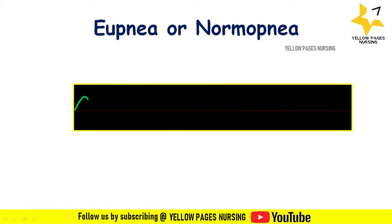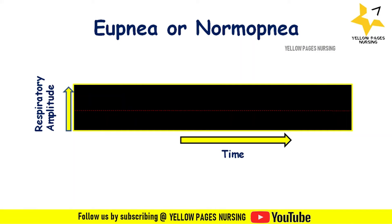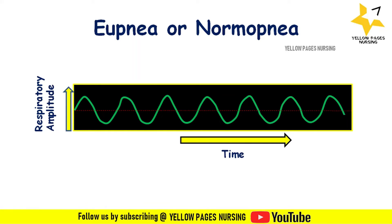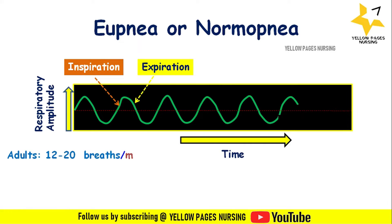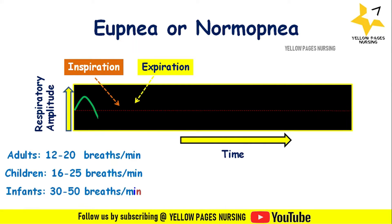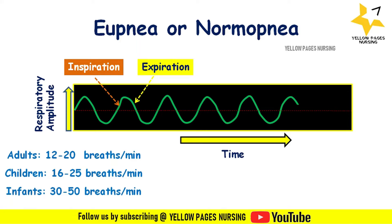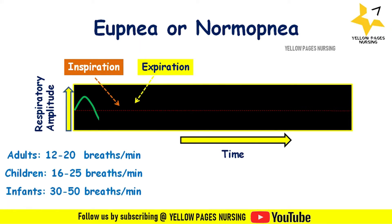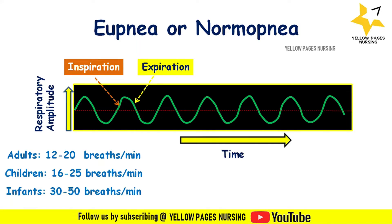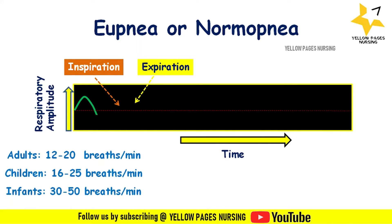Now comes eupnea, or normopnea — the normal breathing pattern. In the graphical representation, the respiratory amplitude is on the x-axis and time in seconds on the y-axis. The normal breathing pattern for adults ranges between 12 to 20 breaths per minute, for children 16 to 25, and for infants 30 to 50 breaths per minute. The ascending curves indicate inspiration and the descending curves indicate expiration.